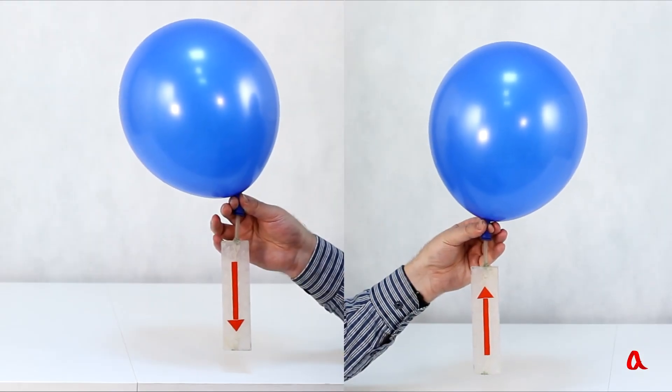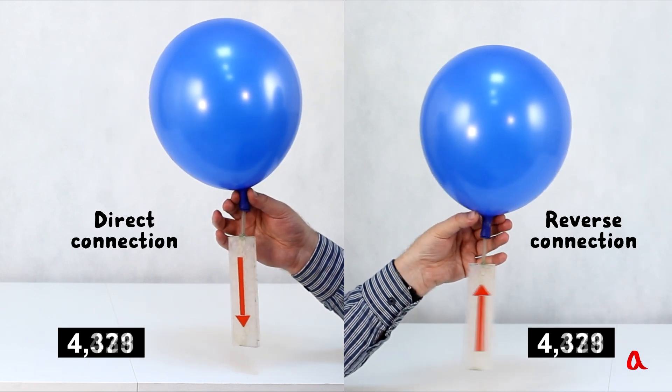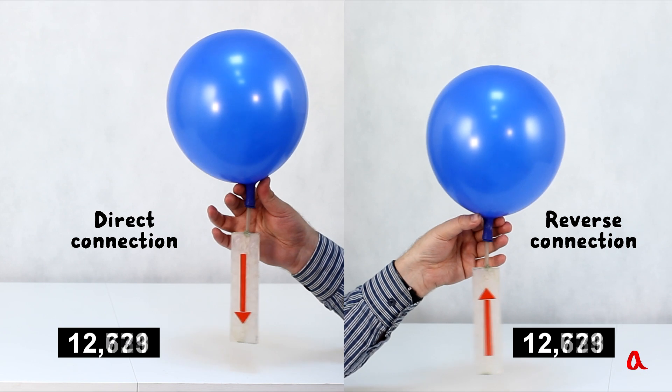Without the valve the balloon deflates in 15 seconds. Now if we connect a direct flow valve to the balloon, it deflates in 40 seconds.